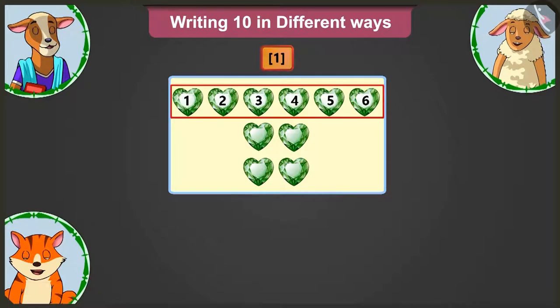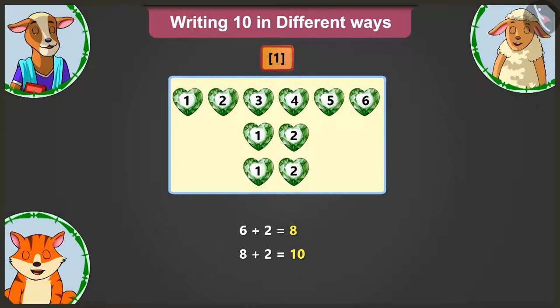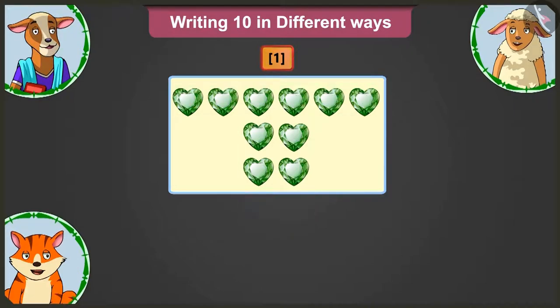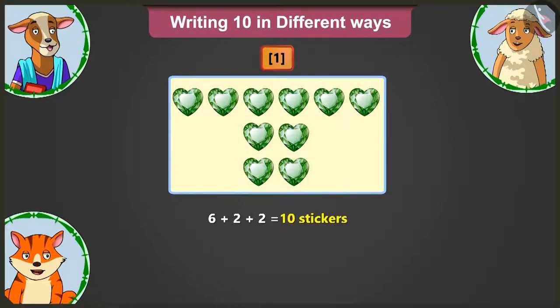So here, adding 2 to 6, we get 8 and adding 2 to 8, we get 10. This card has 10 stickers in total. We will write the sum of 10 like this: 6 plus 2 plus 2 equals 10 stickers.